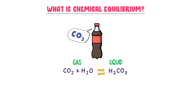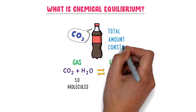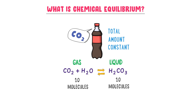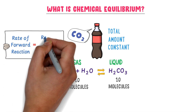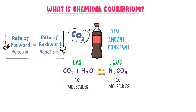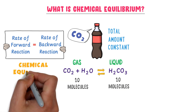A time will come when 10 molecules of carbon dioxide gas will convert to liquid phase, and at the same time, 10 molecules of carbon dioxide gas will convert from liquid to gaseous state. The total amount of carbon dioxide gas remains constant inside the bottle. Here, the speed of forward reaction is equal to the speed of backward reaction, because 10 molecules convert from gaseous to liquid state and 10 molecules convert from liquid to gaseous state. Hence, this point is called chemical equilibrium.